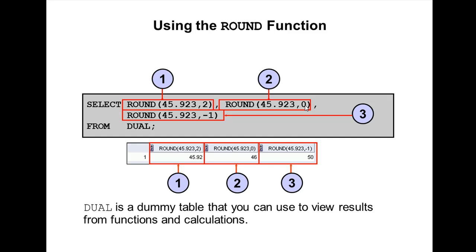The round function has two arguments: one is the column or value, and the other is the decimal number. If the second argument is 0, the value is rounded to 0 decimal places. If the second argument is 2, the value is rounded to 2 decimal places. If we use minus 1, the value is rounded to 1 decimal place to the left.